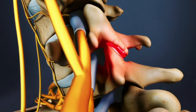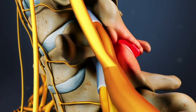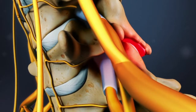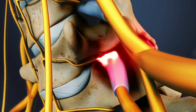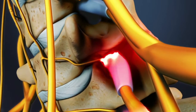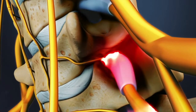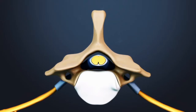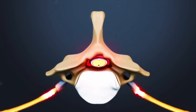This friction can lead to the development of osteophytes, or bone spurs, which can encroach upon the nerve roots as they exit the spinal canal through the foraminal opening, or they can encroach centrally on the spinal cord itself.